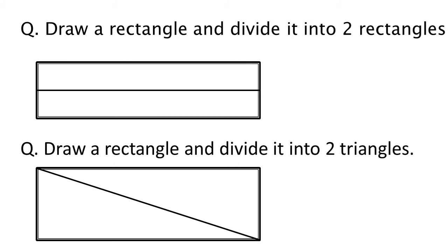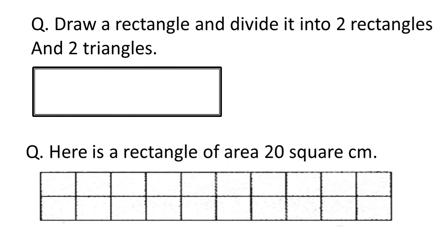This was about drawing a rectangle and dividing it into either two rectangles or two triangles. Now coming to the next slide: draw a rectangle and divide it into two rectangles and two triangles. In a single rectangle, they are asking to draw two rectangles and two triangles. We draw a line exactly in between the rectangle, and this line divides the rectangle into two smaller rectangles.